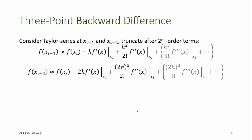To improve the precision of estimates of the first derivative, we can include additional points in the Taylor series expansions. Here we'll introduce the three-point backward difference method for calculating an estimate of the first derivative.